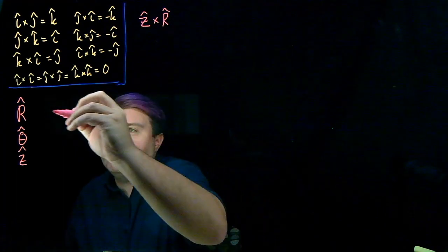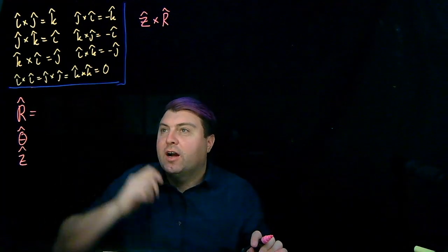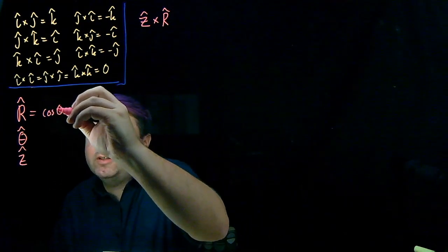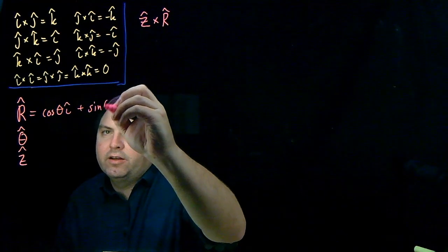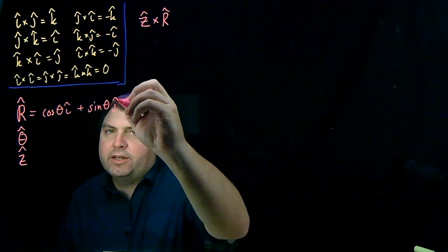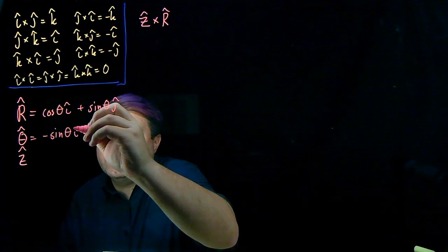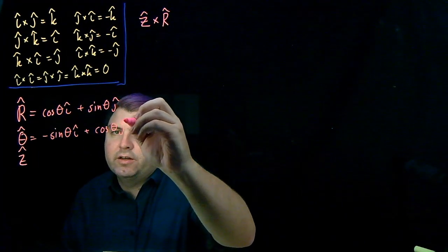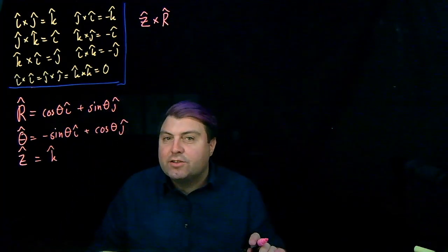The first step is to define R̂ in terms of Cartesian coordinates, which we've done in previous classes and videos: R̂ = cosθ î + sinθ ĵ, θ̂ = −sinθ î + cosθ ĵ, and Ẑ is just K̂.